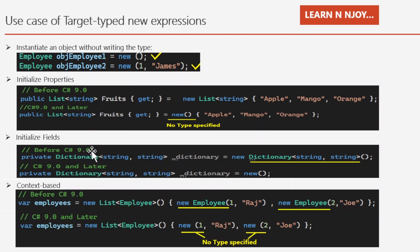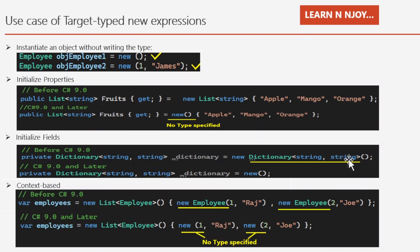We can also use target-type new expressions to initialize fields. Before C# 9.0, we'd write: private Dictionary<string, string> dictionary = new Dictionary<string, string>(); In C# 9.0 and later, we can remove Dictionary<string, string> from the right-hand side: private Dictionary<string, string> dictionary = new(); — the highlighted type specification is no longer needed.